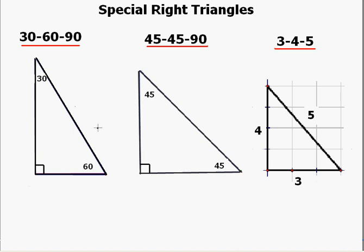If the short leg of this right triangle has a length of x, the hypotenuse in relation to the short leg would be twice as long, giving it a value of 2 times x. The long leg in relation to the short leg would be x times the square root of 3.